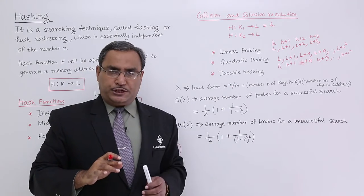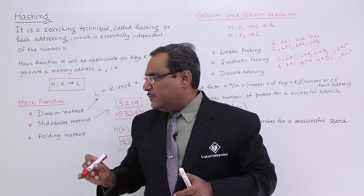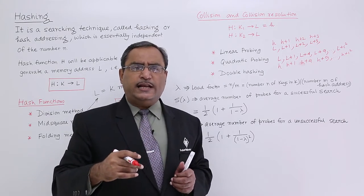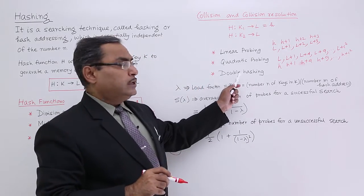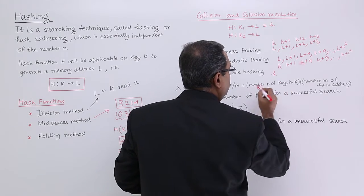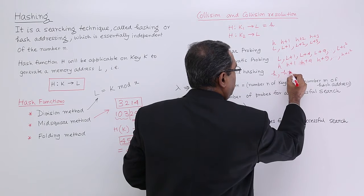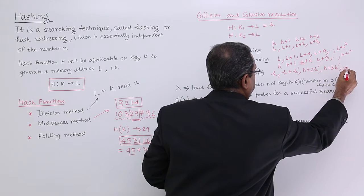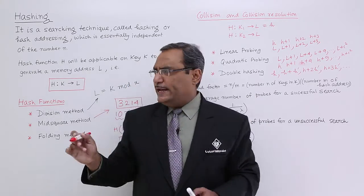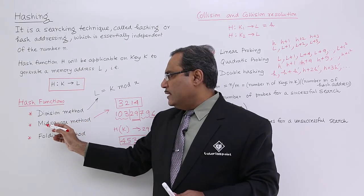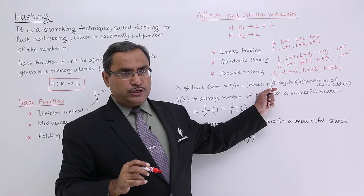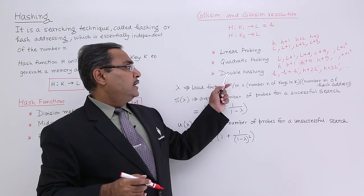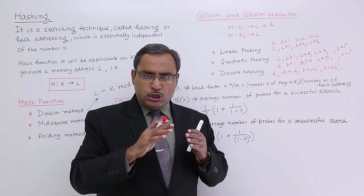Now for double hashing: suppose on key k, applying one hash function, I get address h, and applying another hash function I get h'. In double hashing, I first go to location h. If it is not vacant, I go to h+h', then h+2h', then h+3h', and so on. For example, h may be calculated using the division method and h' using the mid-square method. This is known as double hashing, and in this way we can do collision resolution.